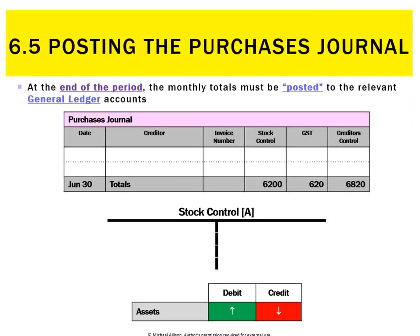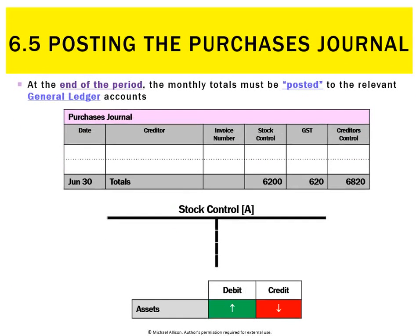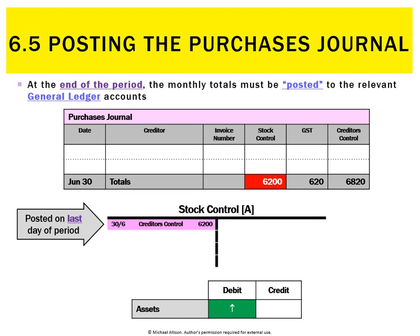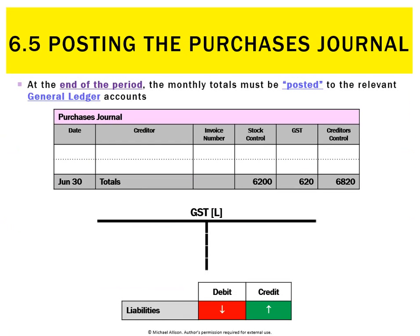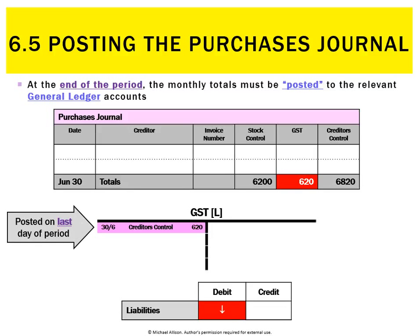Now I need to post the purchases journal for the month. Starting with the first column, stock control — that's stock we've purchased, which makes an asset increase, and when an asset goes up that's a debit. We always post to the general ledger on the last day of the period. Looking at the GST column, we've got GST of 620 — that's the GST our business has been charged by our suppliers, so that'll make our GST liability go down, and when a liability goes down that's a debit.